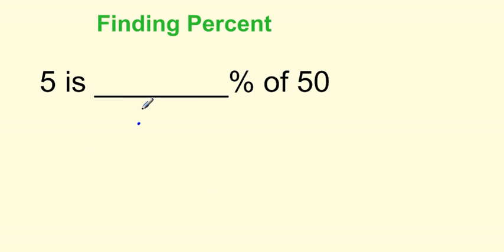Let's try another one. 5 is a certain percentage of 50. So we know, if we call the percentage x, well let's call it n this time, then percentage of 50, of always means times, it's going to give us 5.